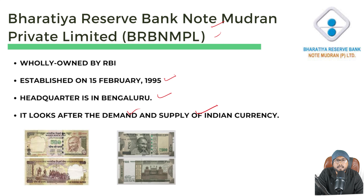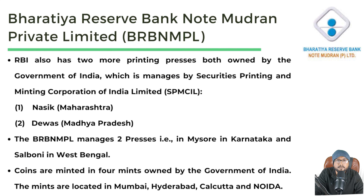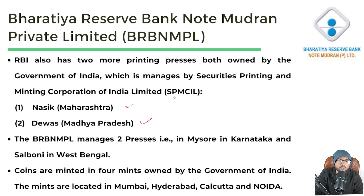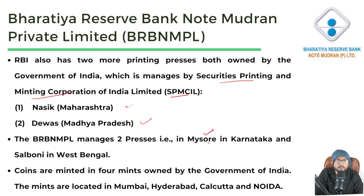Regarding note printing, there are 4 presses in India. Two presses are owned by the Government of India — located in Nasik and Devas — and are managed by SPMCIL, which stands for Securities Printing and Minting Corporation of India. The remaining two printing presses are owned by Bharatiya Reserve Bank Note Mudran Private Limited and are located in Mysore, Karnataka, and Salmoni, West Bengal.